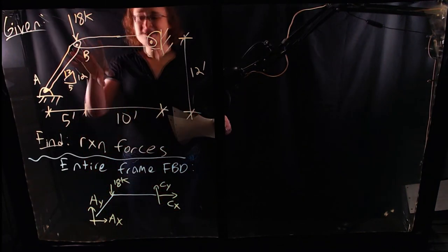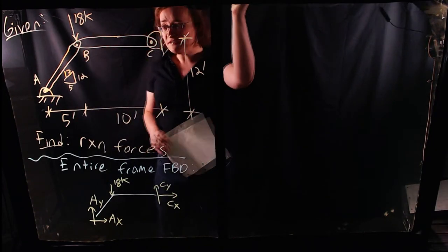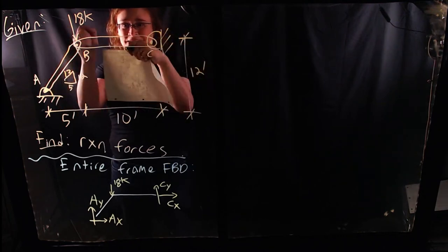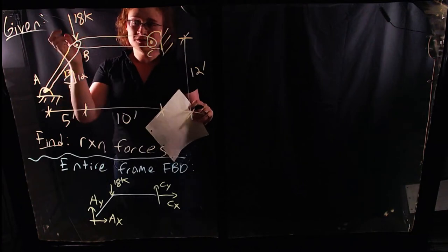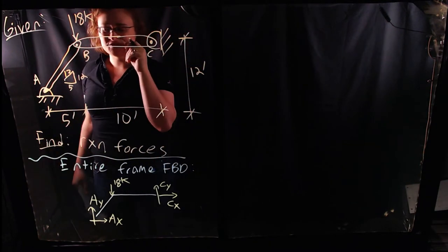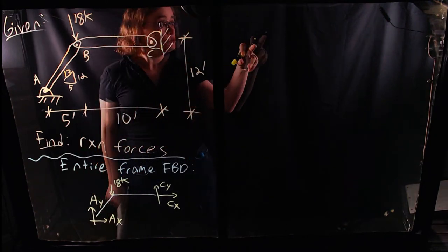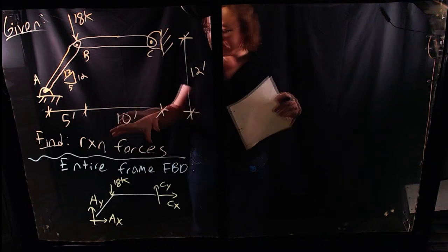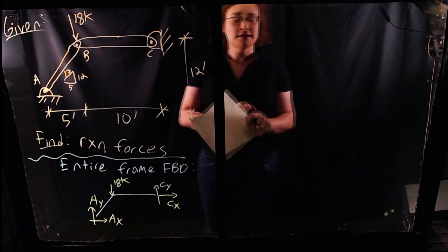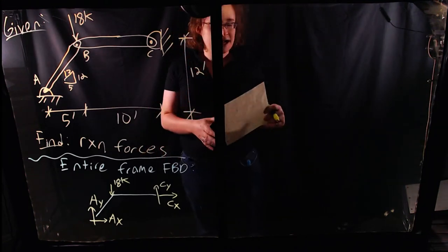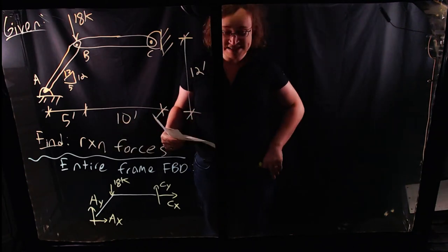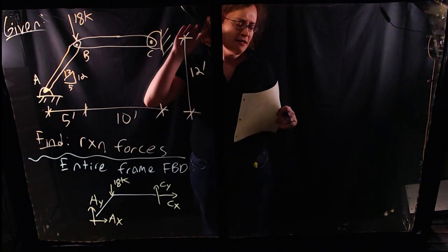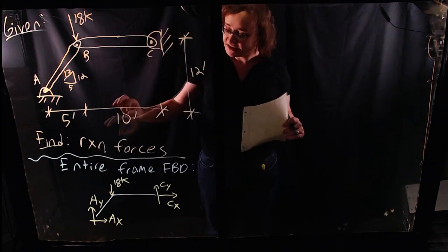Now, this object is not a true rigid body — there's a pin at joint B. If you cut it out, you could bend it back and forth. That means it can only transfer an x-force and y-force through the pin — not a full set of forces including moment. That's what we'll see in the next free body diagram. So the first step was creating a free body diagram treating the entire frame as a single rigid body.